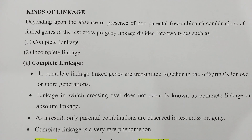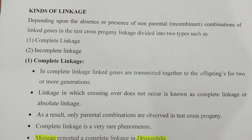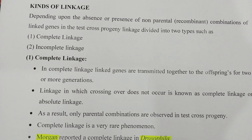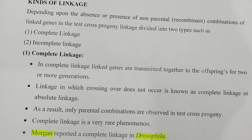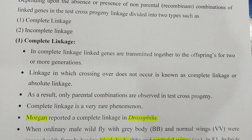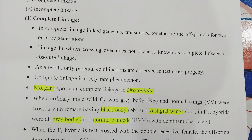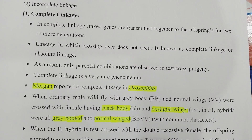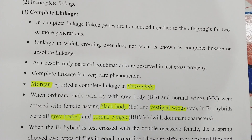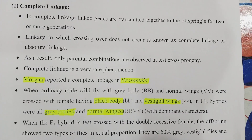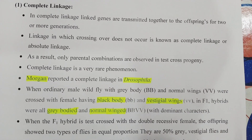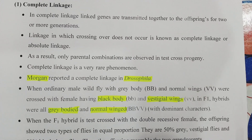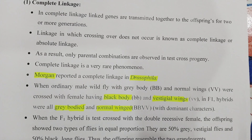Depending upon the presence or absence of non-parental combinations, linkage is divided into two categories: complete linkage and incomplete linkage. In complete linkage, genes are linked completely — they do not separate while going to the next generation. Whatever genes are present on a single chromosome, they are transferred as-is to the next generation. Only parental combinations are obtained in the progeny; recombinants are not obtained.